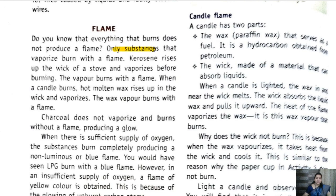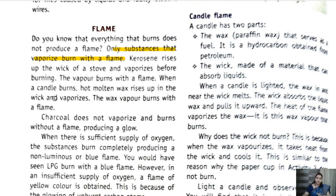Only substances that vaporize burn with a flame. When there is a sufficient amount of oxygen present and it burns with a blue light, that is called a flame. Kerosene rises up the wick of a stove and vaporizes before burning — the vapor burns with a flame. When a candle burns, hot molten wax rises up the wick and vaporizes. The burning of charcoal does not produce vapor, so it is not a flame.